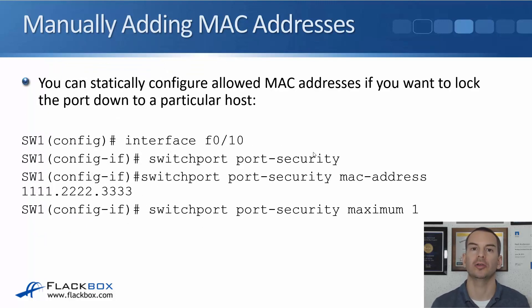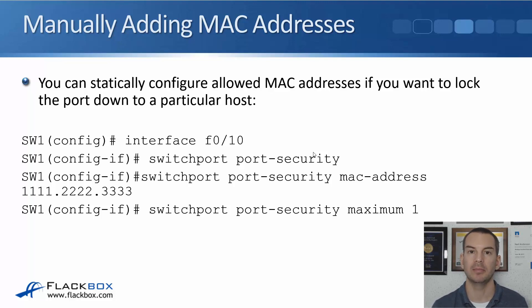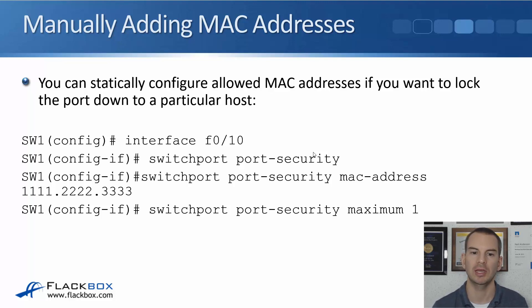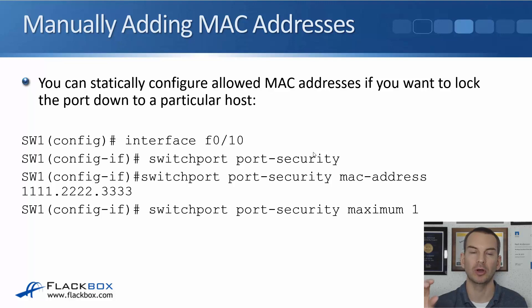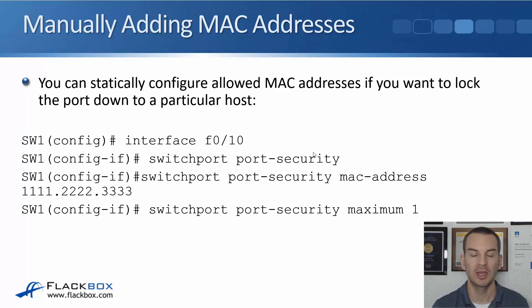Let's talk about how to lock the port down to particular hosts based on their MAC address. We can manually add the MAC address that is allowed on a particular port. The configuration here: interface fast 0/10, switchport port-security to enable port security, switchport port-security mac-address 1111.2222.3333, and then switchport port-security maximum 1. Once we've done this, it's only that one MAC address that is allowed to send traffic into this port. If any other MAC address tries to send traffic in, it's going to get blocked and will take the violation action, which by default is to shut down the port.